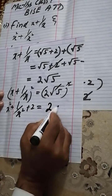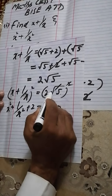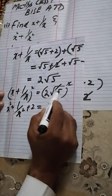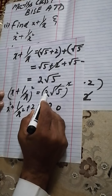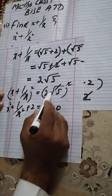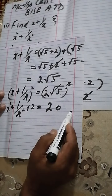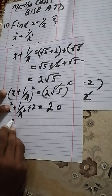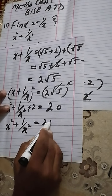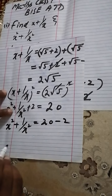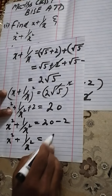The square and square root cancel, giving 5, and 2² = 4, so 4 × 5 = 20. Moving 2 to the other side: x² + 1/x² = 20 − 2 = 18. So x² + 1/x² = 18.